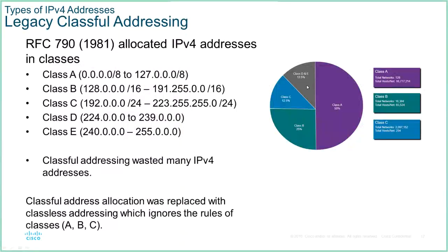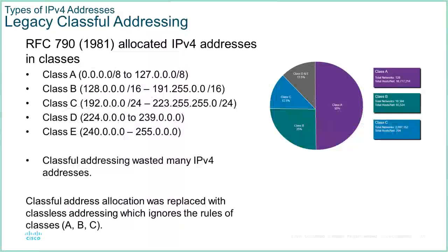Class D and E were divided into the remaining portions. Class D was our multicast addresses. Class E was reserved for future research applications. There were specific rules about how you could use class D and class E addresses and who could use them.